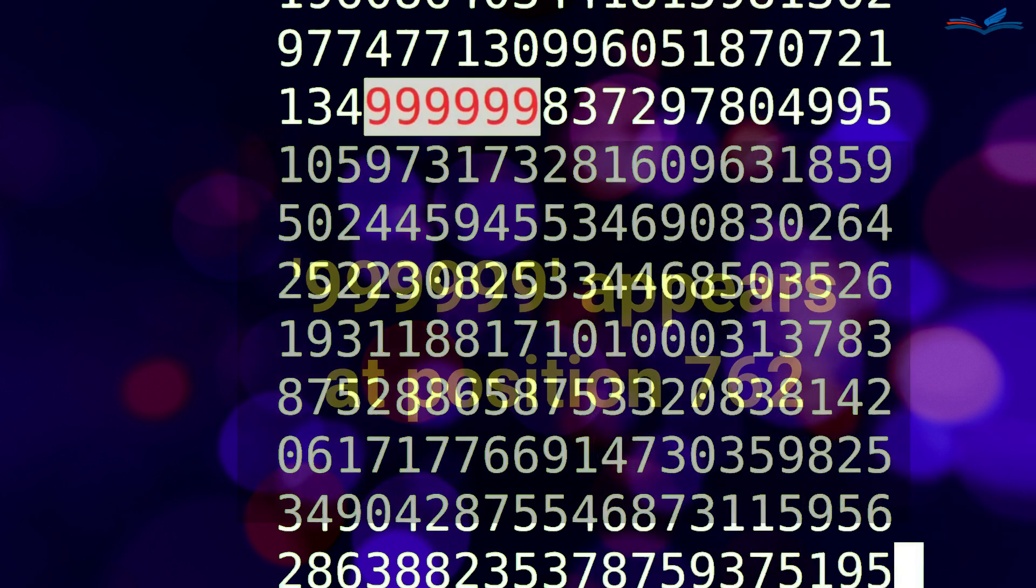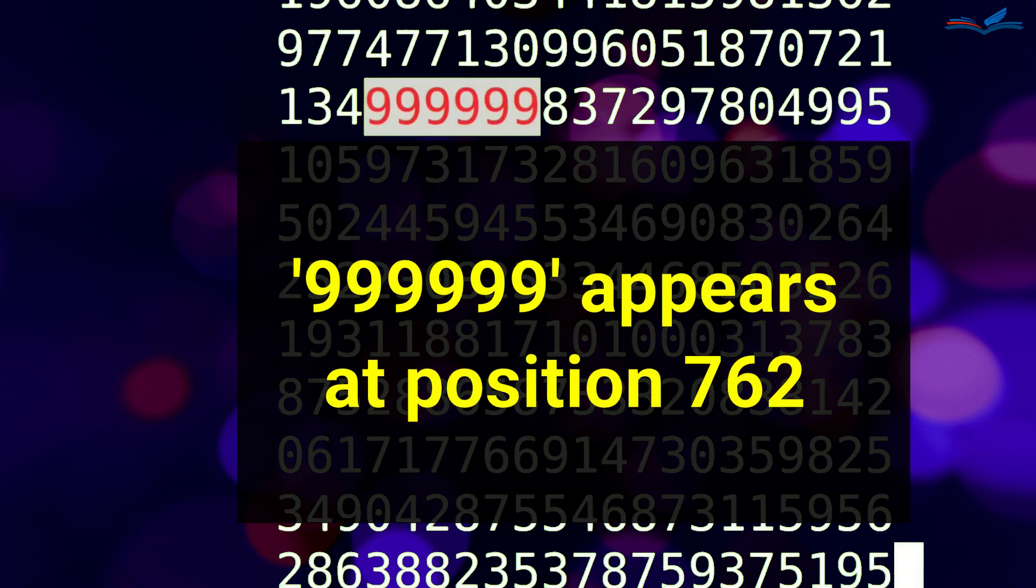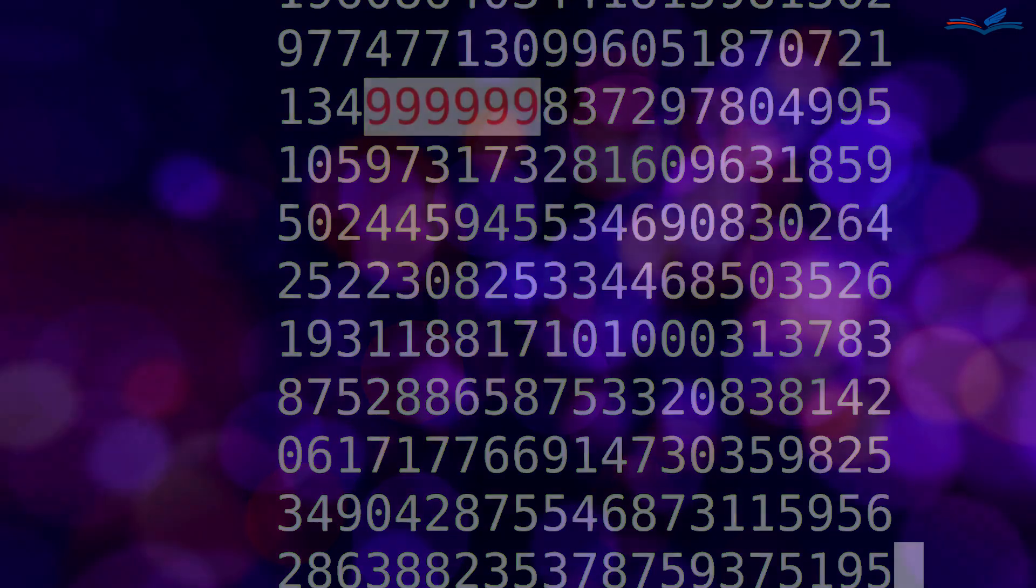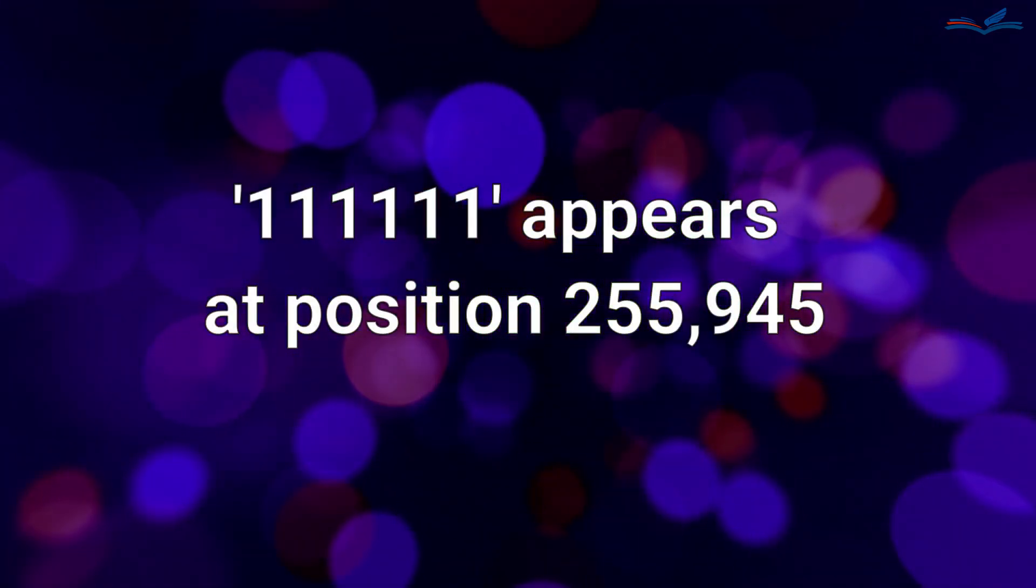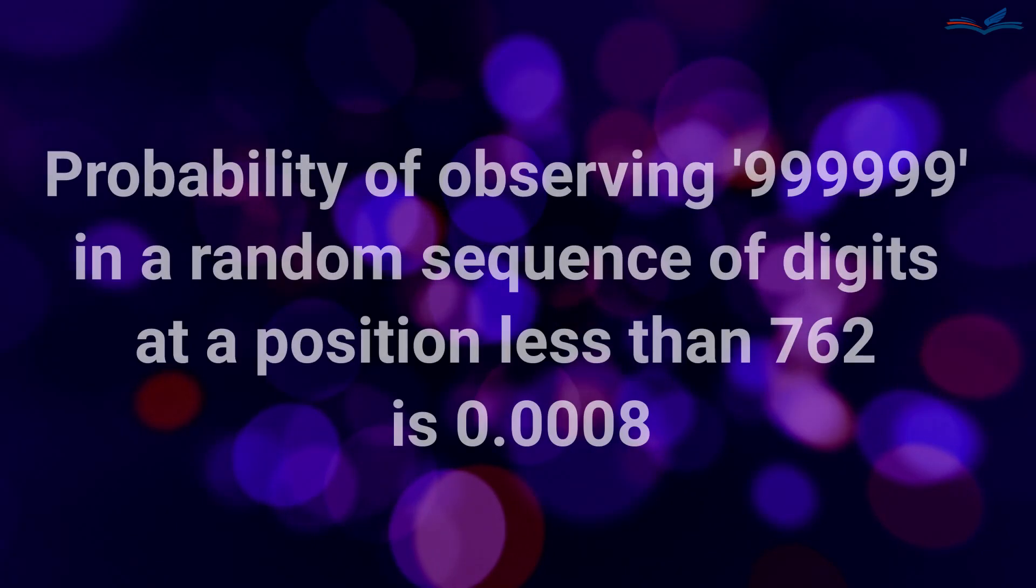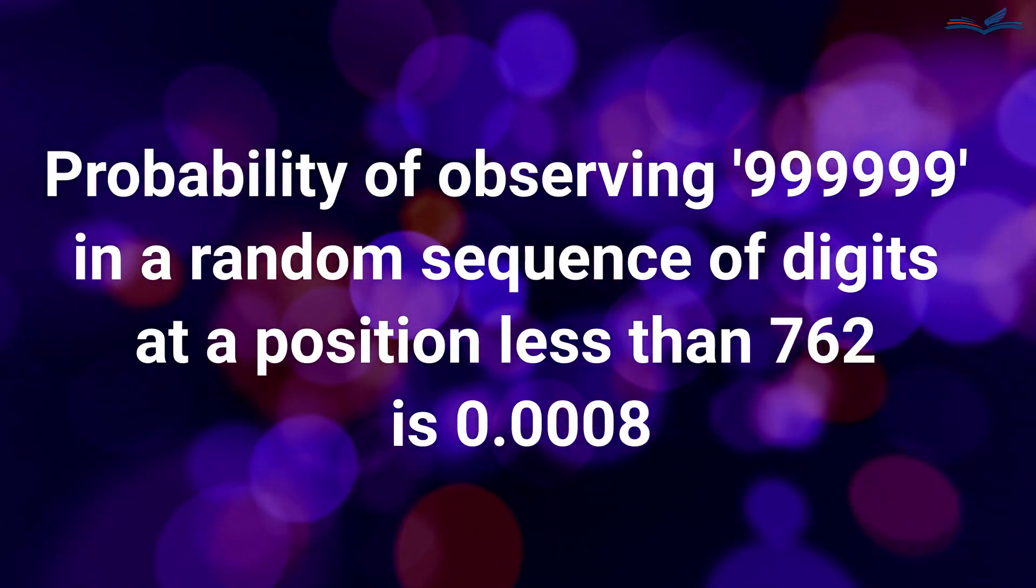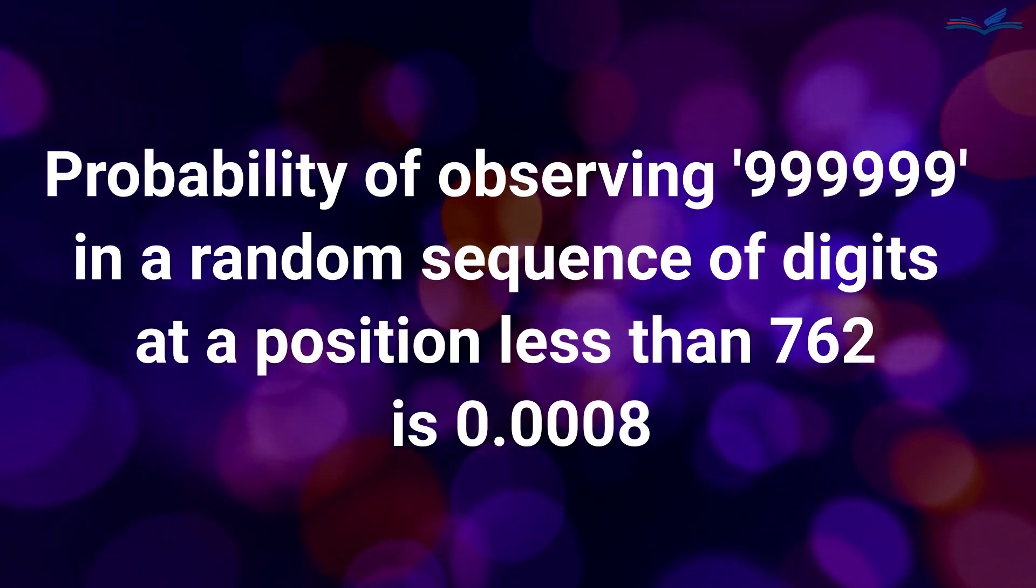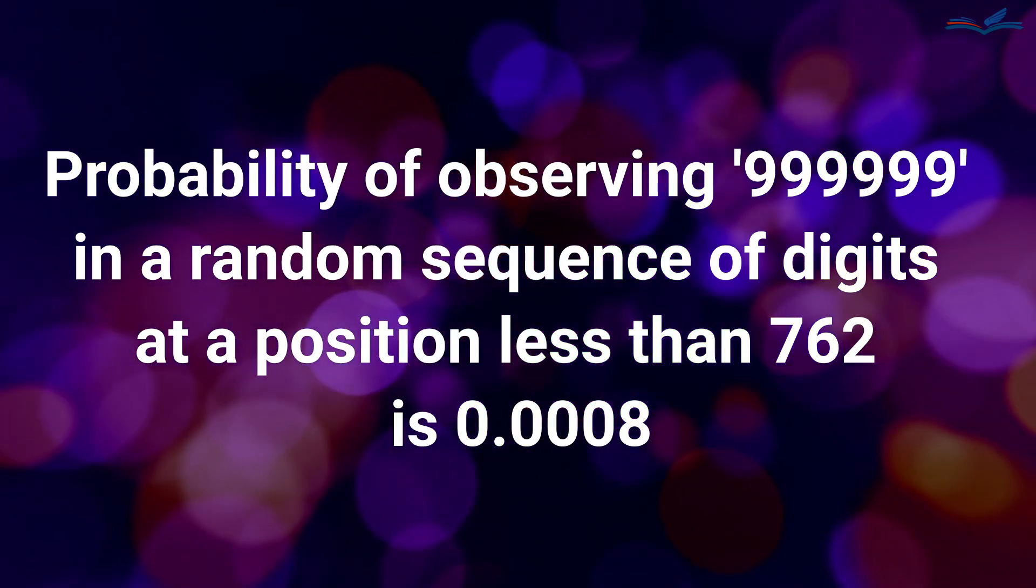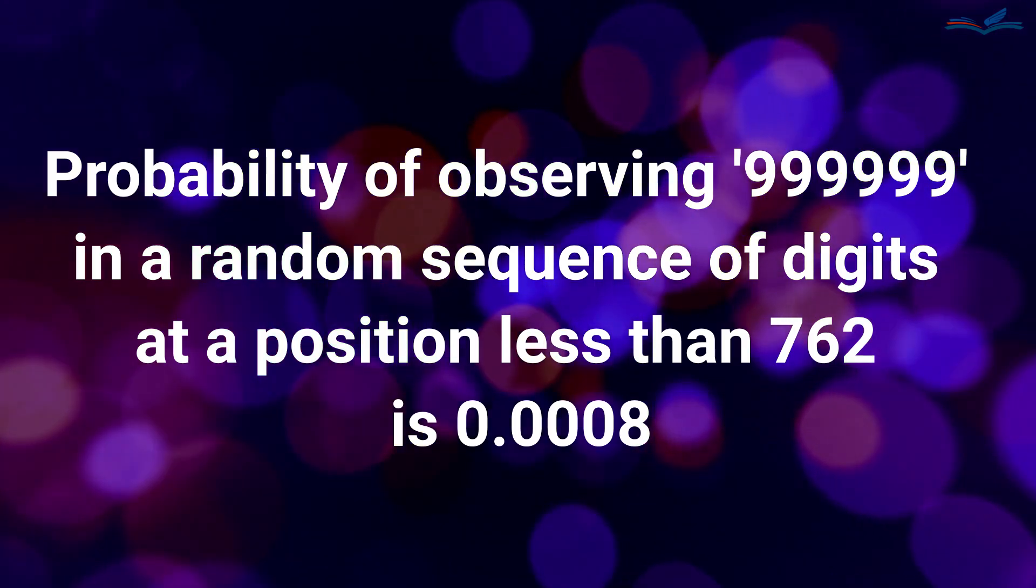However, we wouldn't expect well-recognizable numbers to appear very early in the sequence. For example, similar patterns consisting of the same digits appear only after position 250,000. The probability of finding such a simple, well-recognizable pattern, such as 999999, within the first 762 digits of a random irrational number is less than .0008. This is a very small probability.